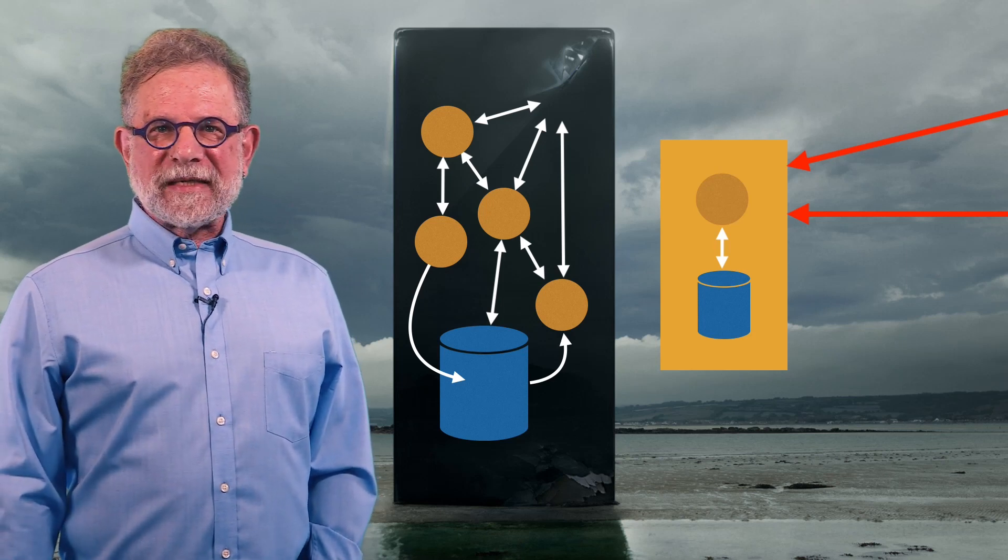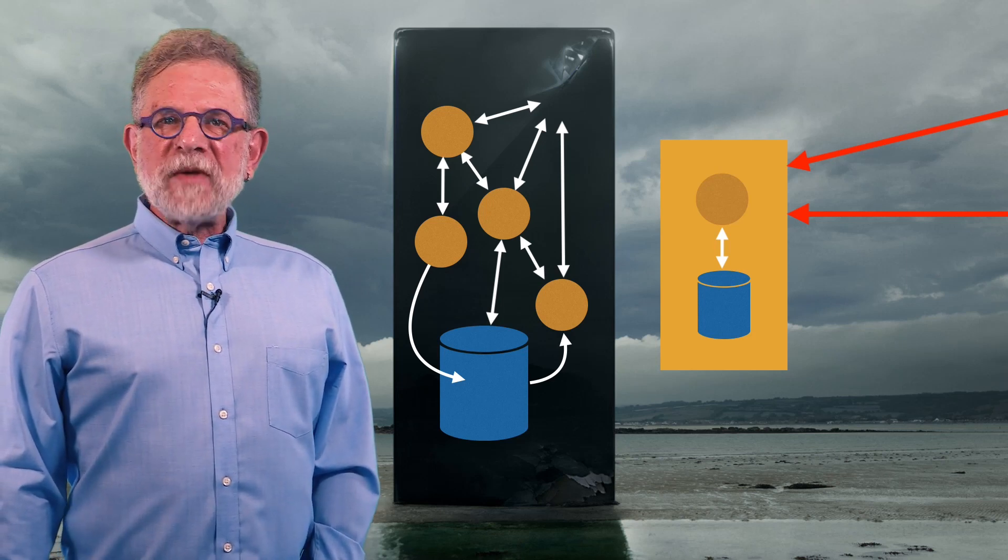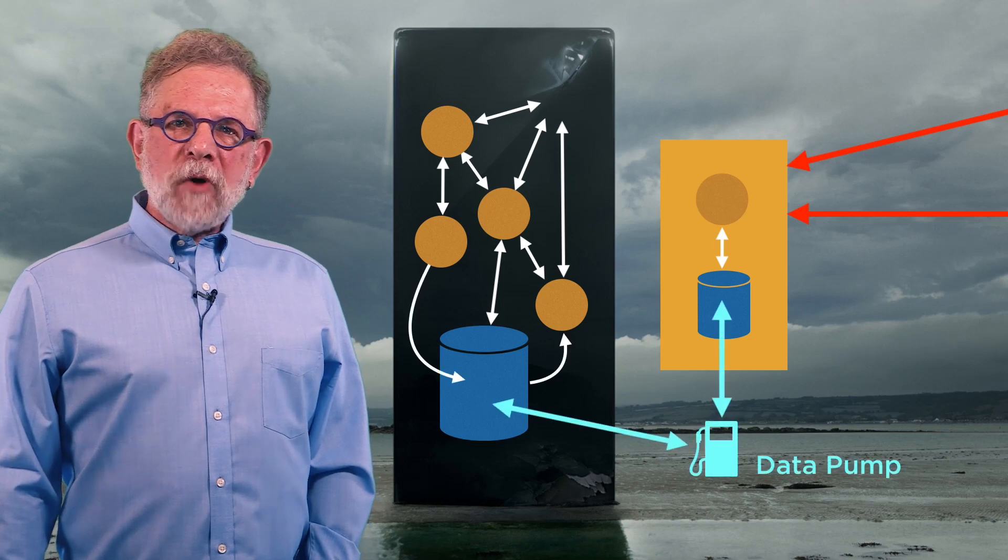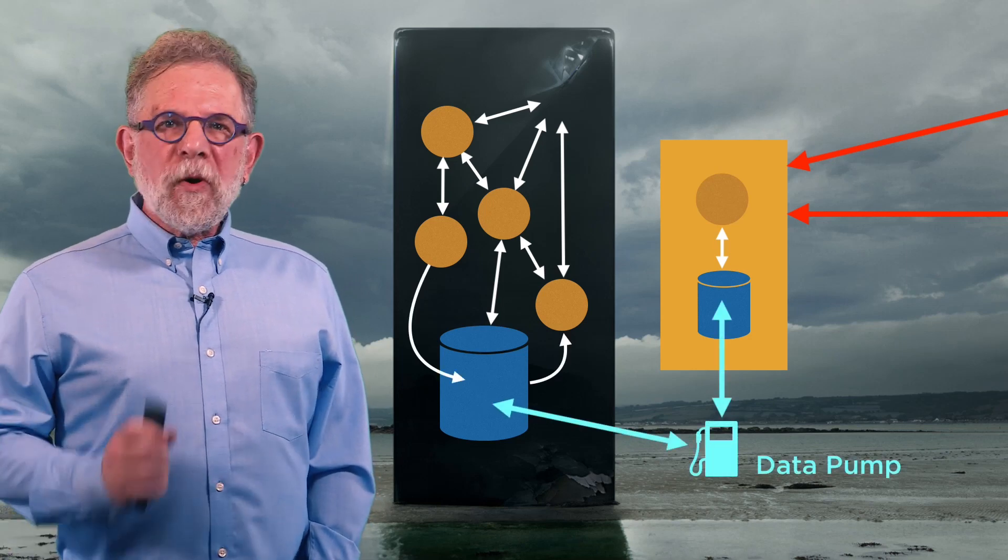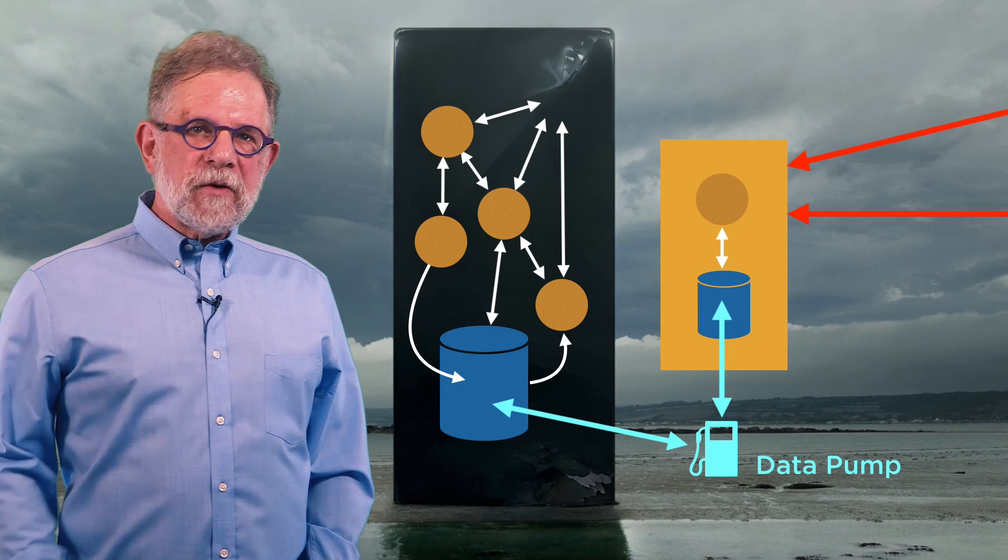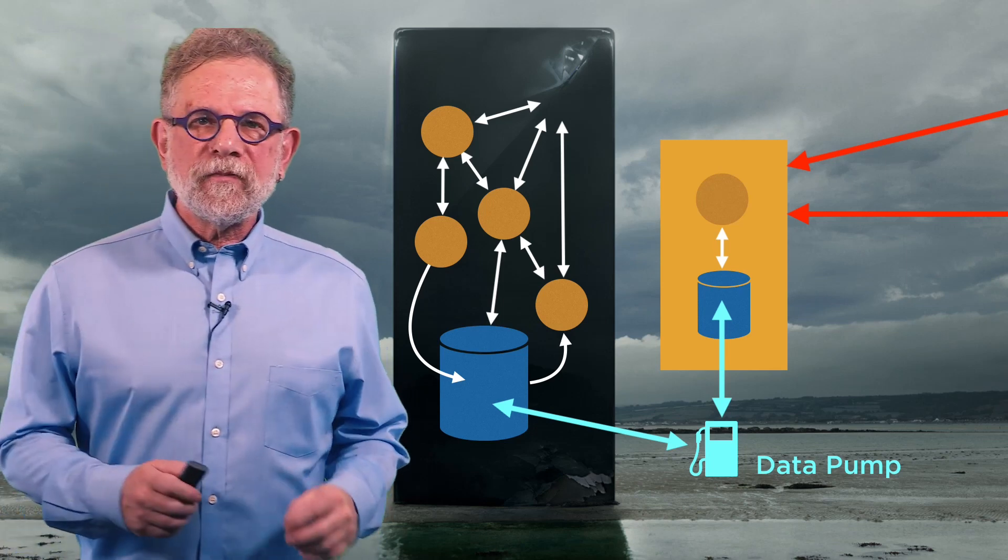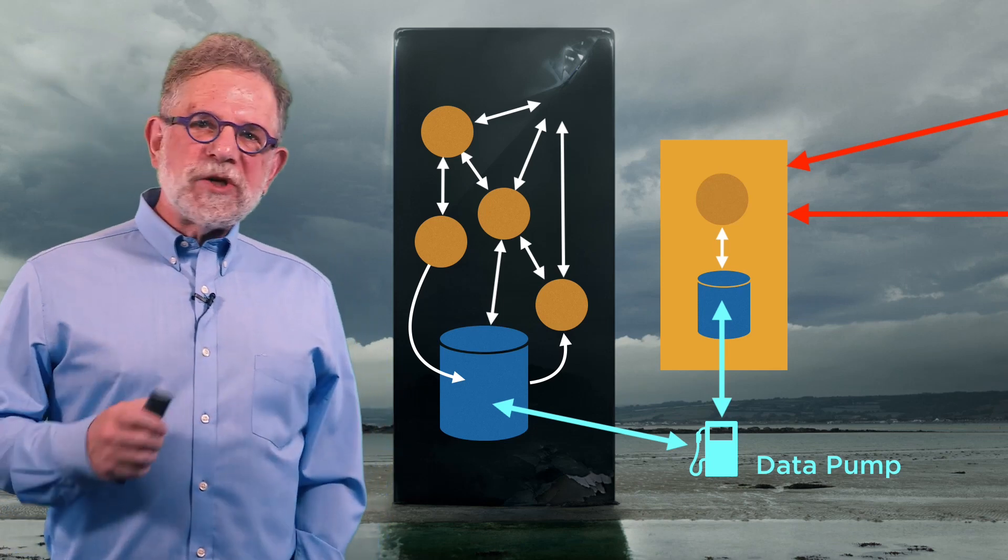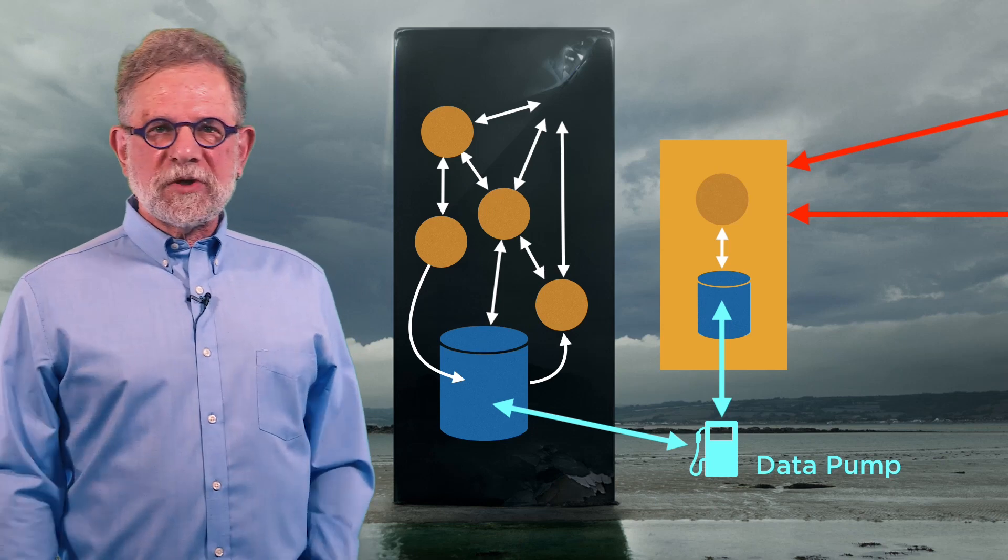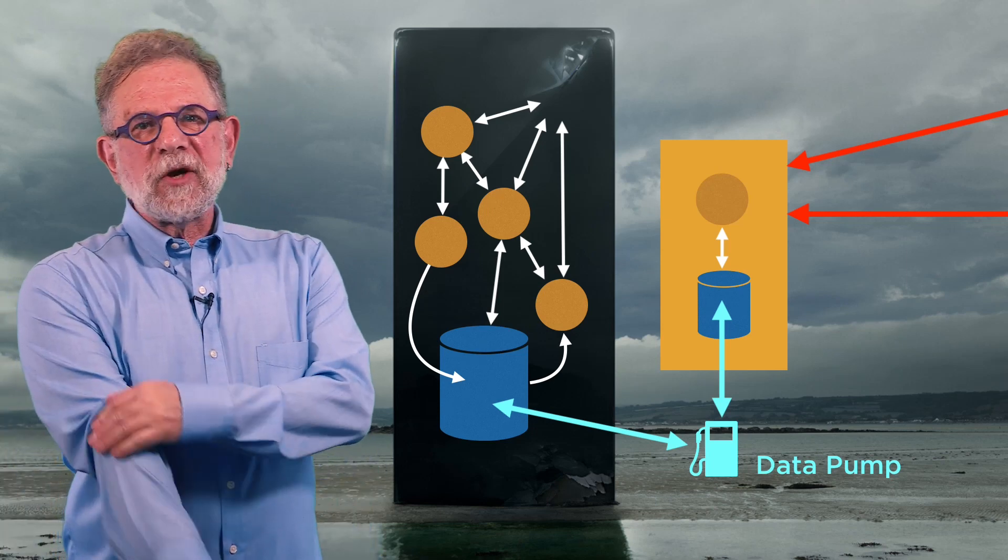We have two databases, though, and they have to be in sync. So, the next order of business is that we will add a program called a data pump, the sole purpose of which is to keep the database in the microservice in sync with the database in the monolith. So, whenever something changes on one side, it's going to be reflected on the other side.